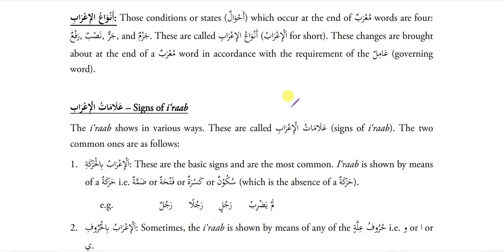Anwa'ul-Arab — types of Arab. The conditions that occur at the end of Morav words are four: Harfun, Jarrun, Nasbun and Rafun. These are called Anwa'ul-Arab, brought about at the end of Morav words according to the requirement of the Amil. Mabniy words also accept Zamma, Fatha, Kasra or Sukoon. The writer is telling us that Mabniy words are fixed with Arab, but that Arab can be Fatha, Zamma, Kasra or Sukoon. Similarly, a Morav word can also accept Fatha, Zamma, Kasra or Sukoon.